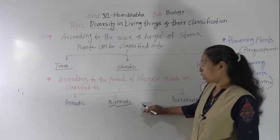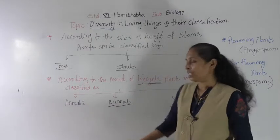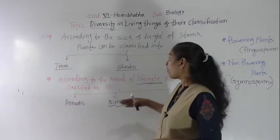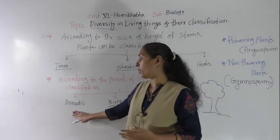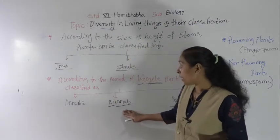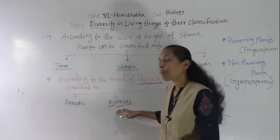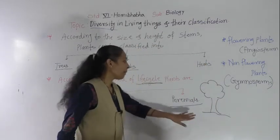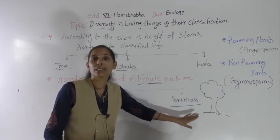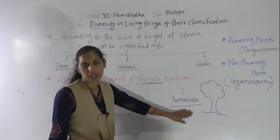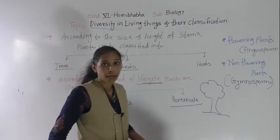Mostly trees come under perennials. This is the classification of plants based on their life cycle: annuals, biennials, and perennials. Examples of annual plants include mostly cereal crops. Examples of biennial plants include carrot and beetroot. Examples of perennial plants include gulmohor, mango, cashew nut, and hibiscus.